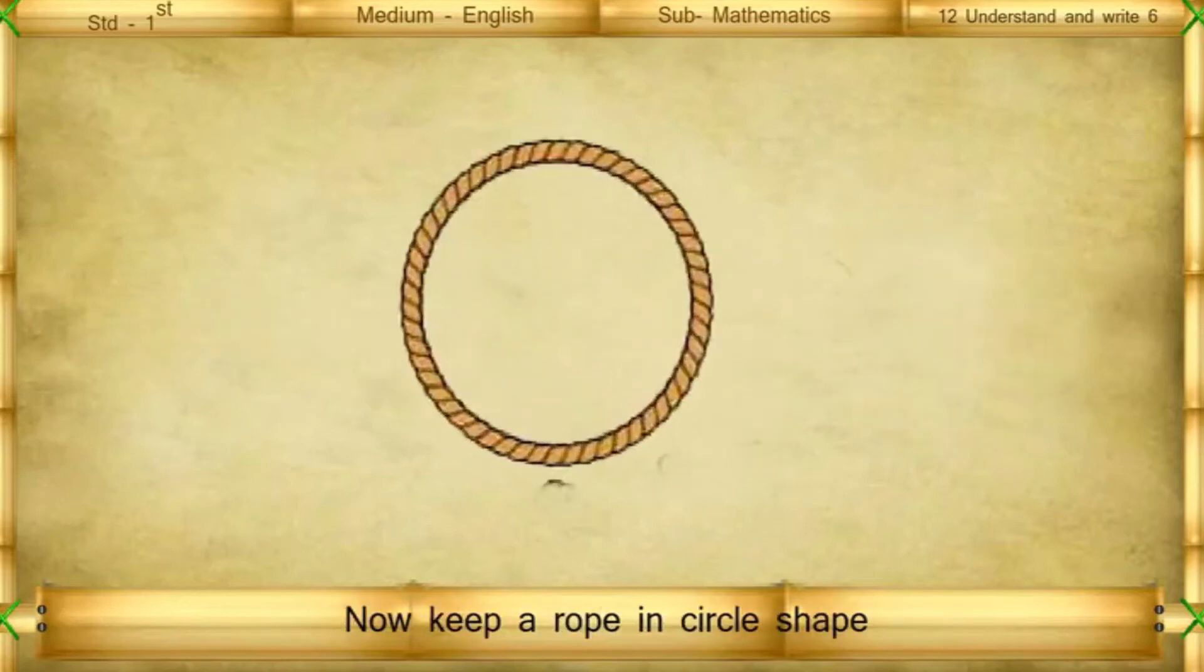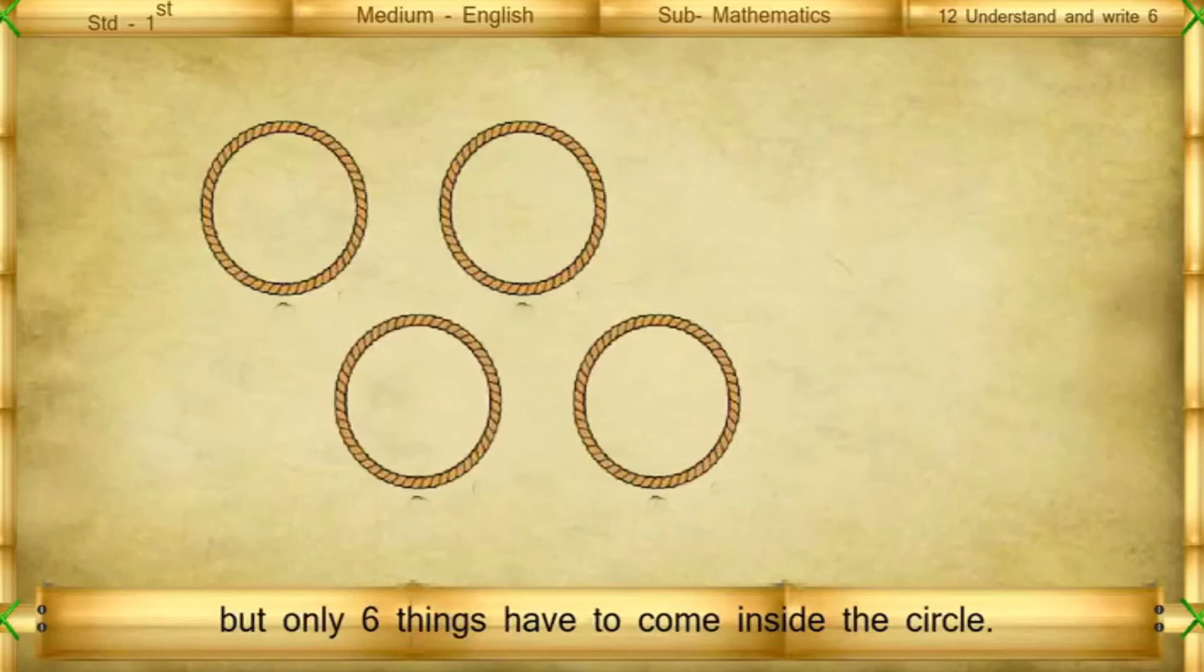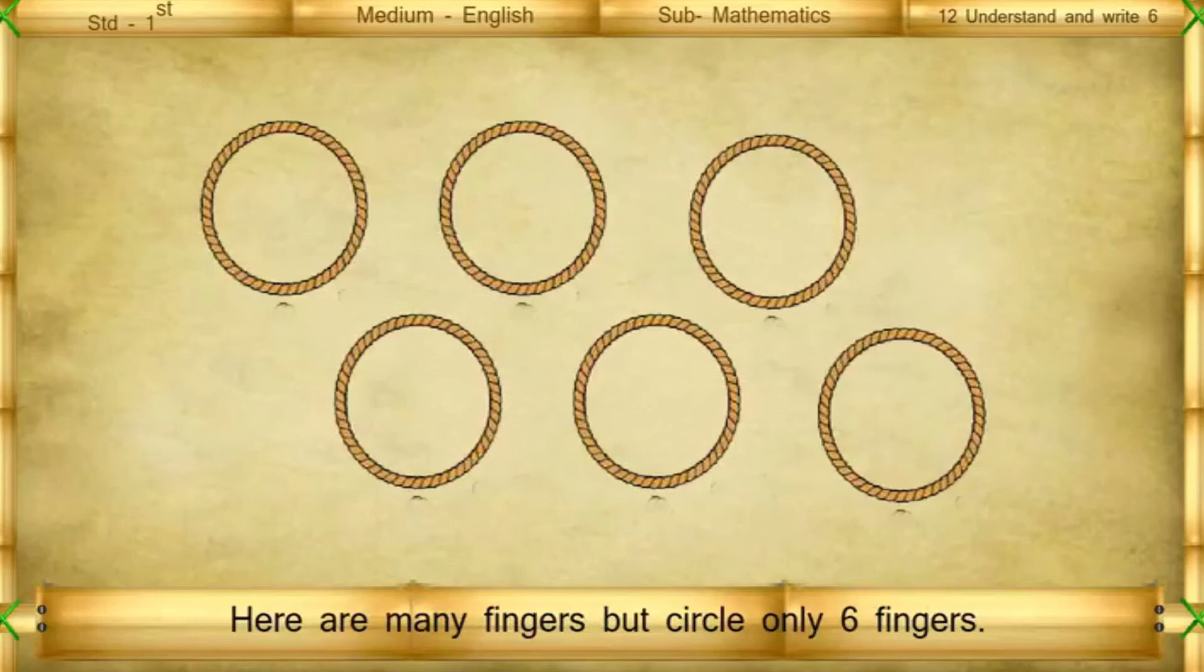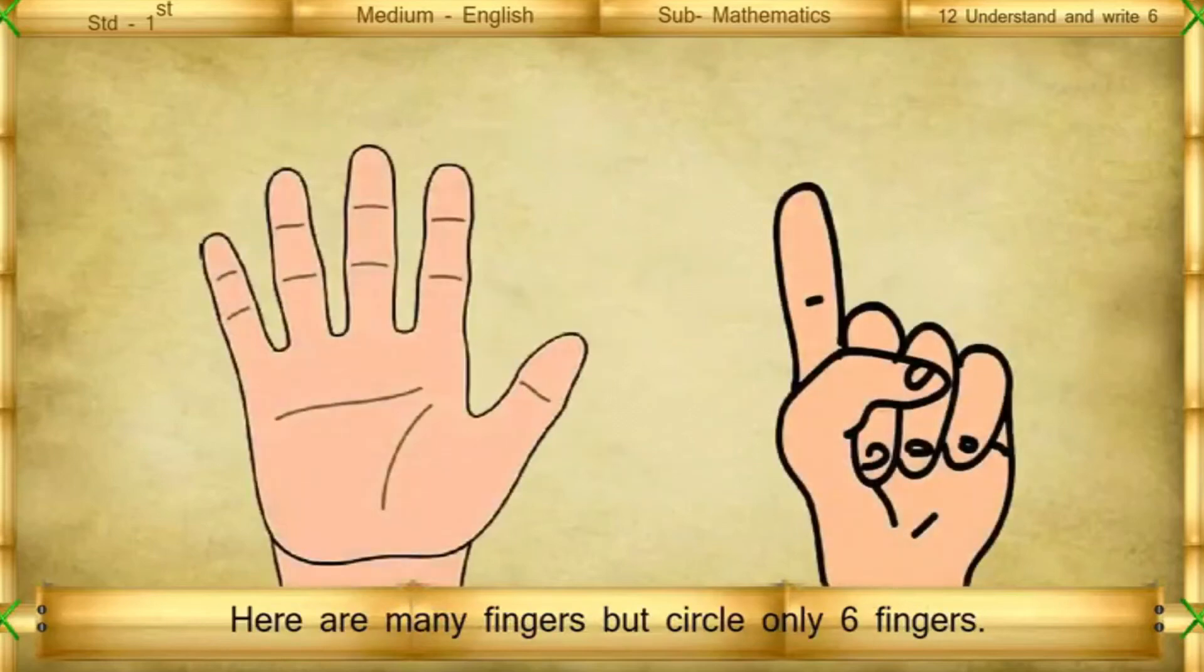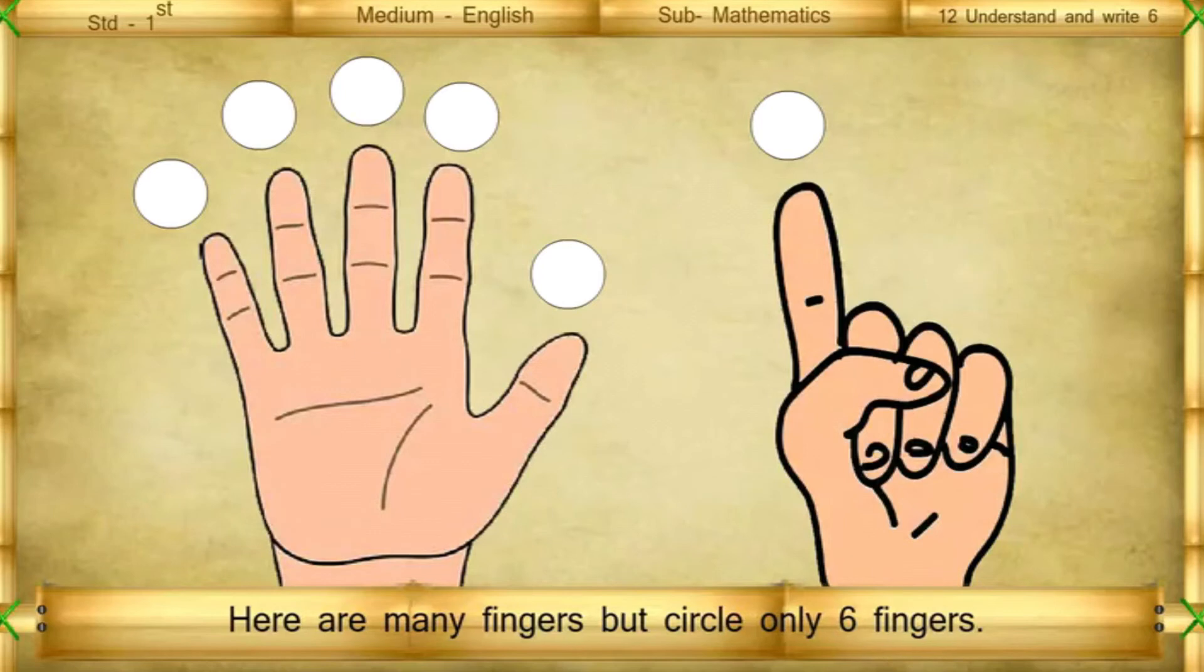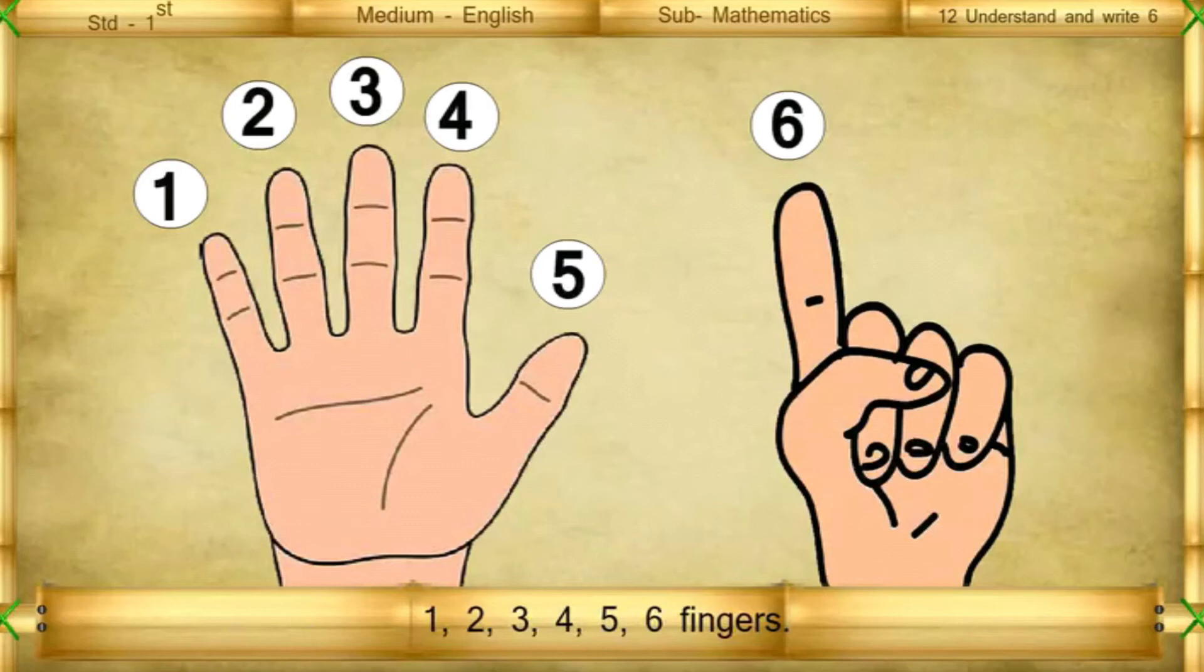Correct. Now, keep a rope in circle shape but only 6 things have to come inside the circle. Here are many fingers but circle only 6 fingers. 1, 2, 3, 4, 5, 6 fingers.